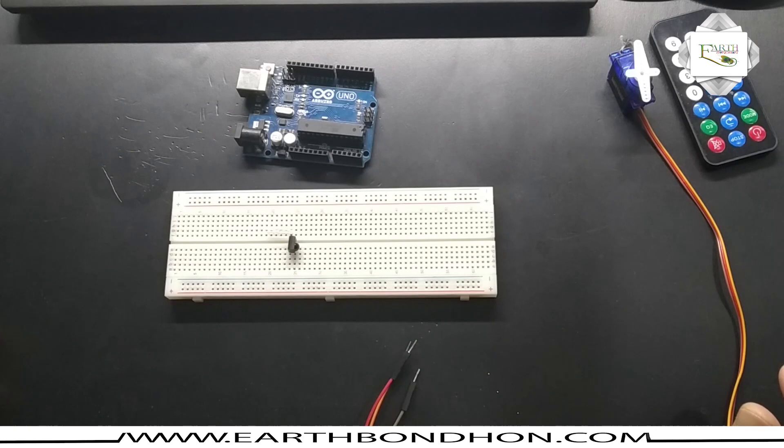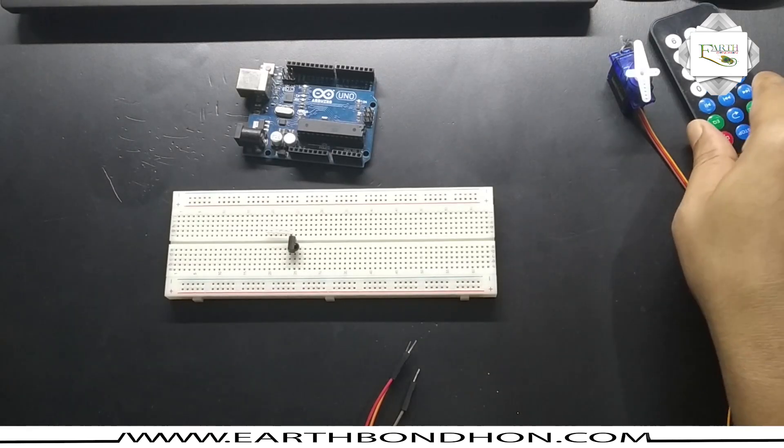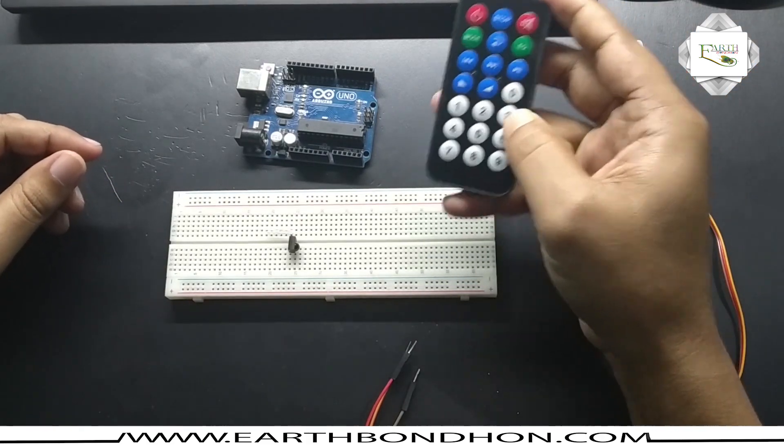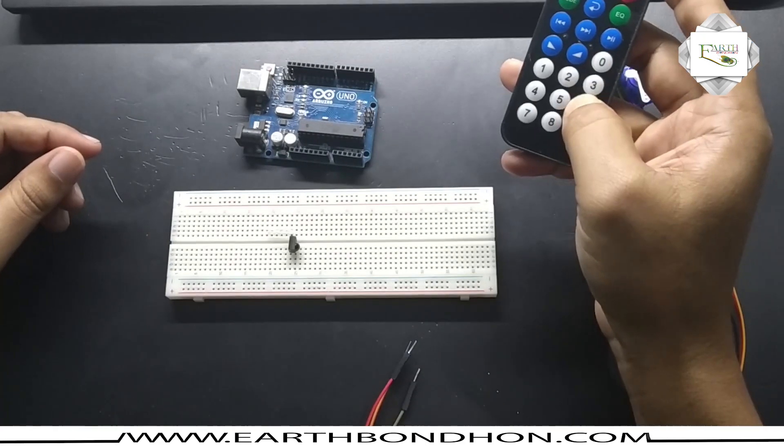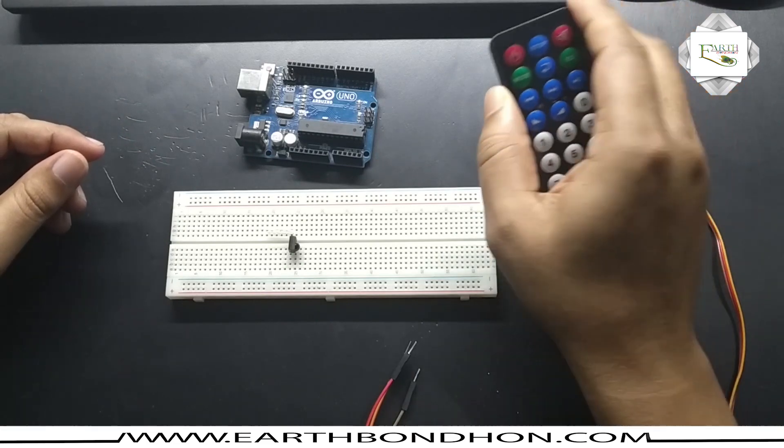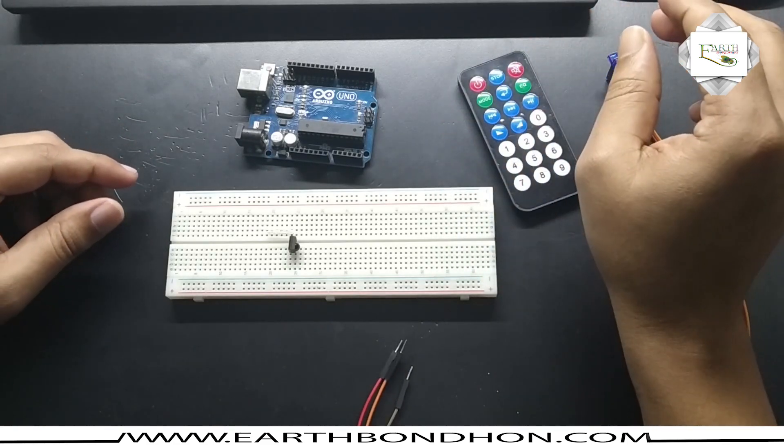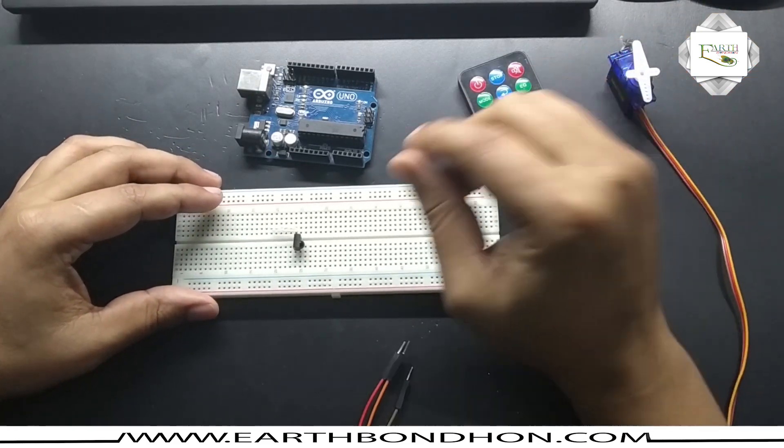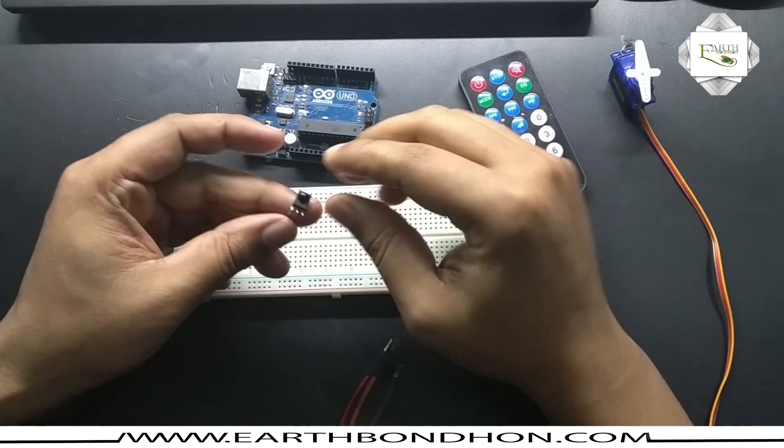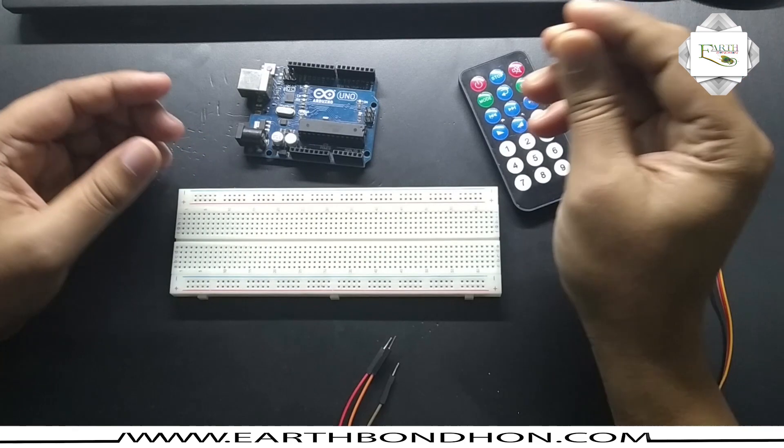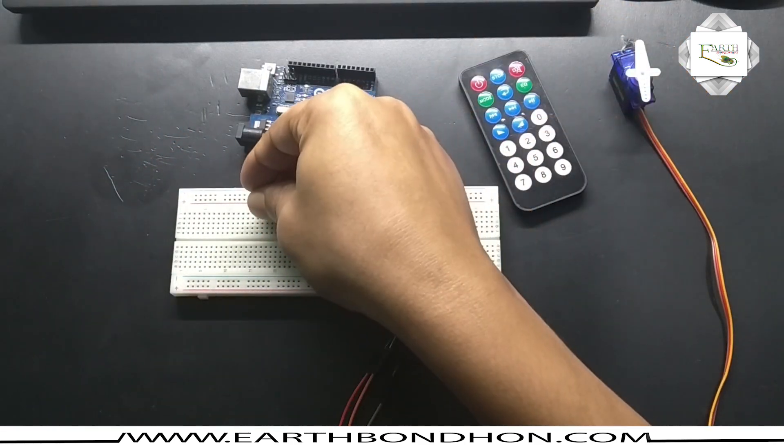Hello viewers, today I'm doing servo motor control by remote. I can control this motor at 30 degrees, 45 degrees, 90 degrees, and variable up and down at any angle. For this project, I need an IR sensor and remote, servo motor, Arduino board, and breadboard. First, I'll set up the IR sensor.